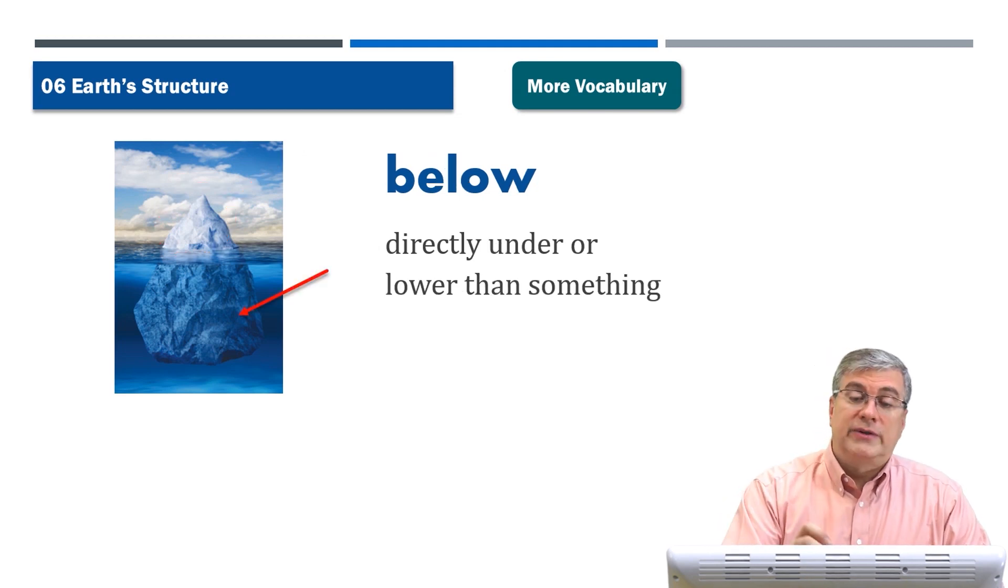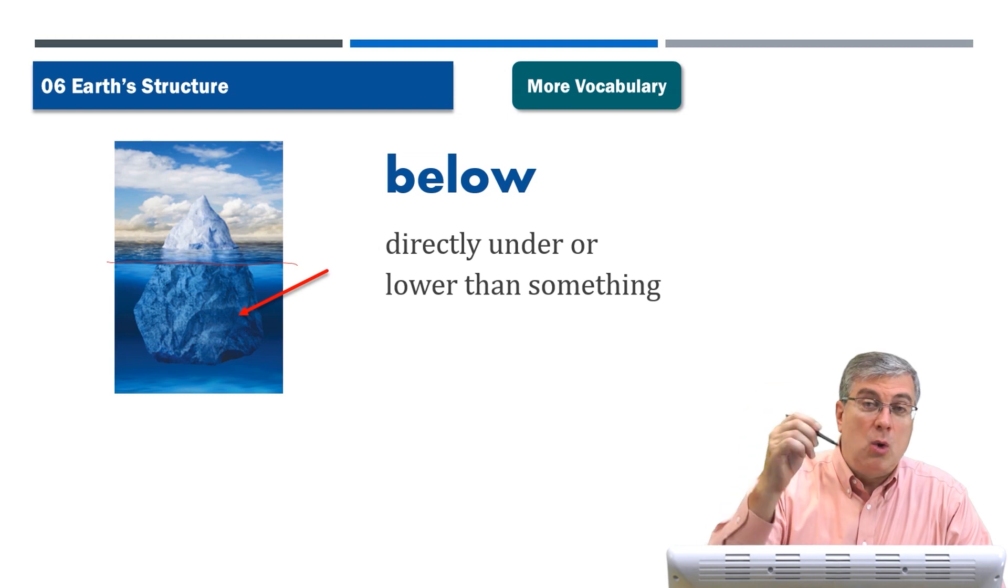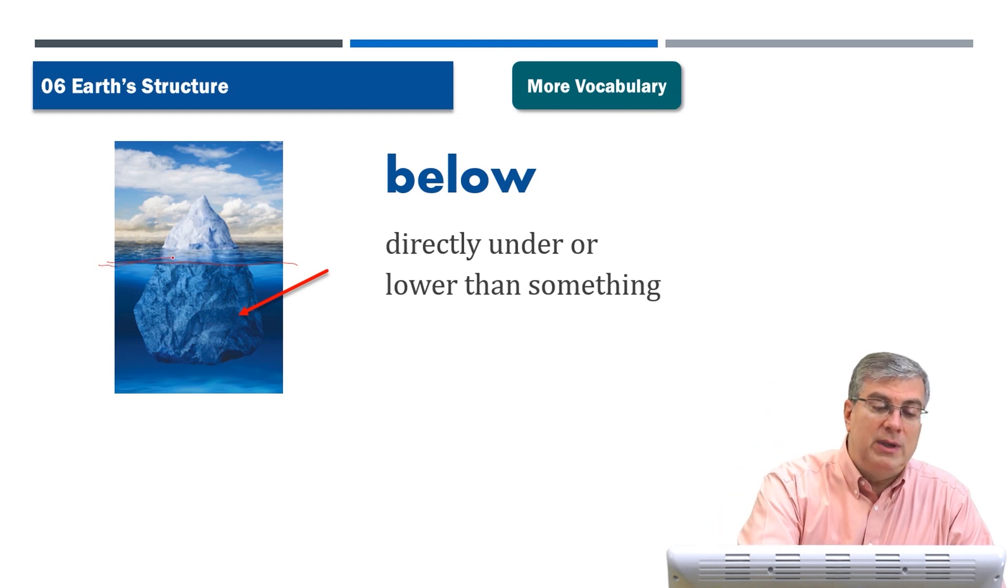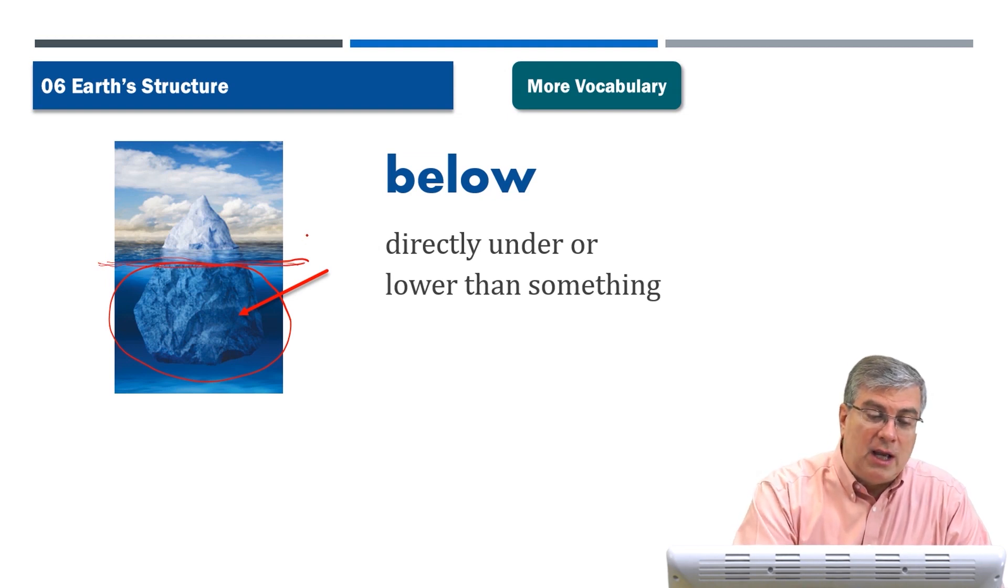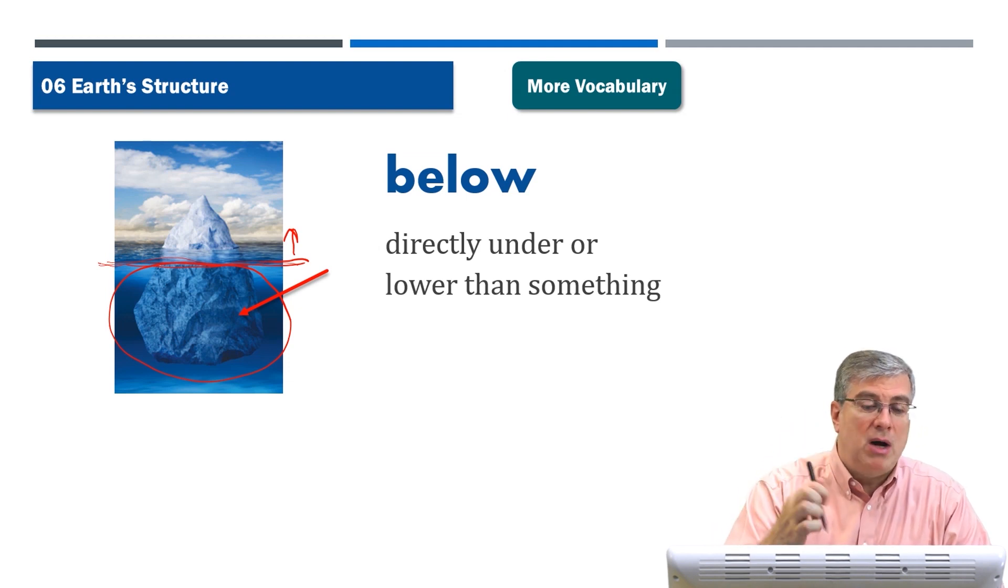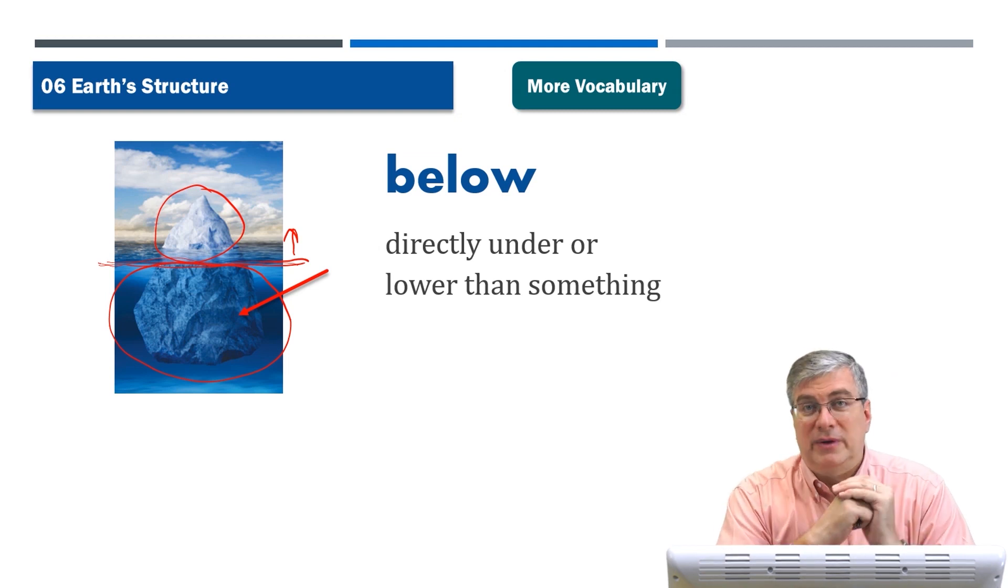And then, of course, our opposite word is below. Below means to be under something or lower than something. Of course, we're talking in relation to the surface of the water. So if it's under the surface of the water, it is below. And 90% of the iceberg is below the surface of the water. Now, if it's in this area, if it's over the surface of the water, it is above. Above and below, they are direct opposites. Okay.